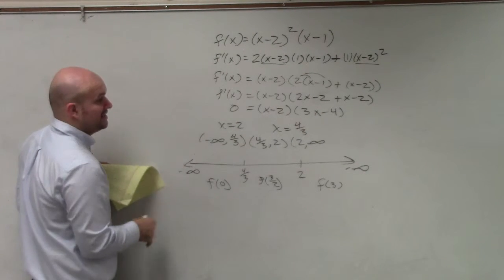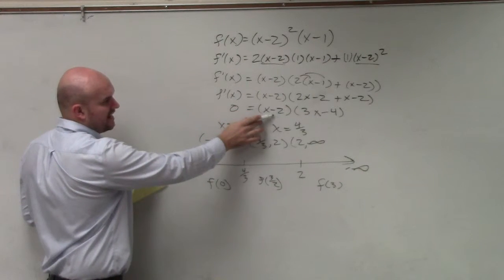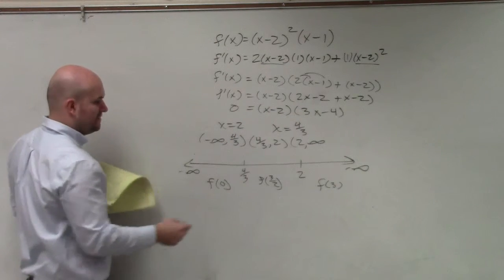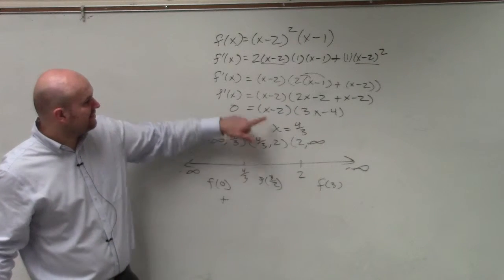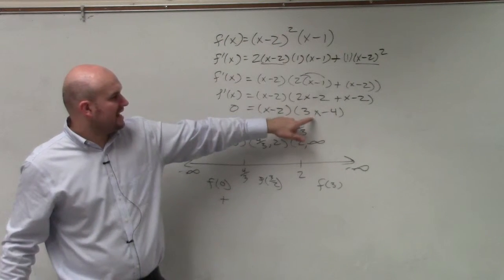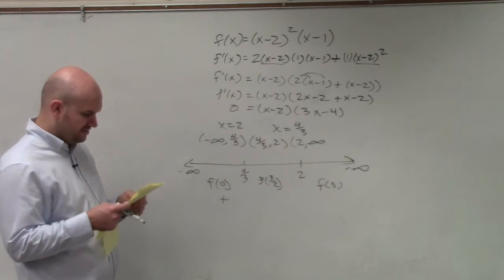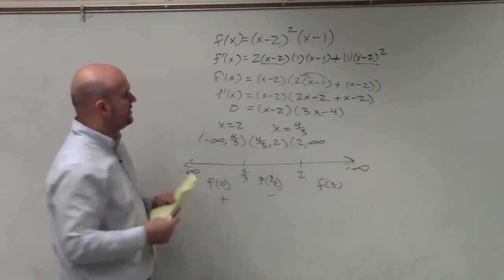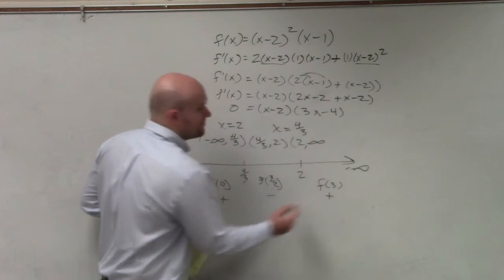So I'm just going to do the plus or minus because I'm trying to do this quickly. So if I plug in 0 back into my function, that becomes a negative, and that's a negative. Would you guys agree? Negative times a negative is going to give you a positive. 3/2, which is the same thing as 1.5, so that becomes a negative. That becomes a positive. So it's a negative times a positive, which is a negative. And then here, if you plug in f(3), that's a positive, and that's a positive, so that would be a positive.